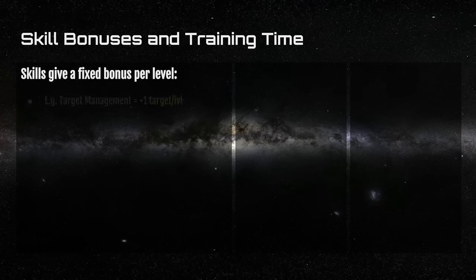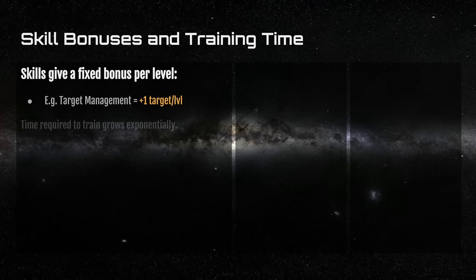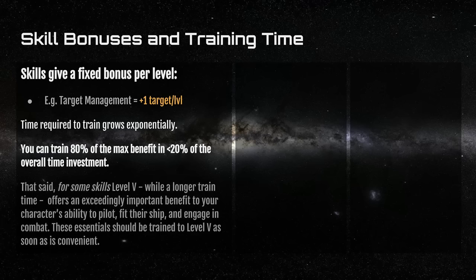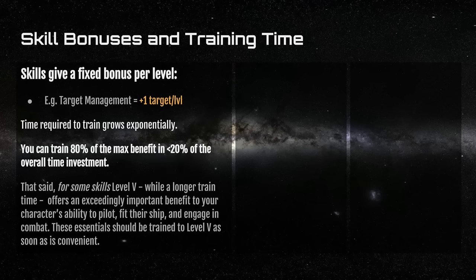Skills give a fixed bonus per level — for example, Target Management gives you one extra locked target per level. The time required to train skills grows exponentially the more you train. You can gain 80% of the maximum benefit of a skill in about 20% of the overall time investment. That said, for some skills the fifth level, while the longest, offers an exceedingly important benefit. Those skills should be trained to level five as soon as is convenient. Which skills specifically should be trained to that level can be outlined by your corporate recruiter or mentors in the game community.